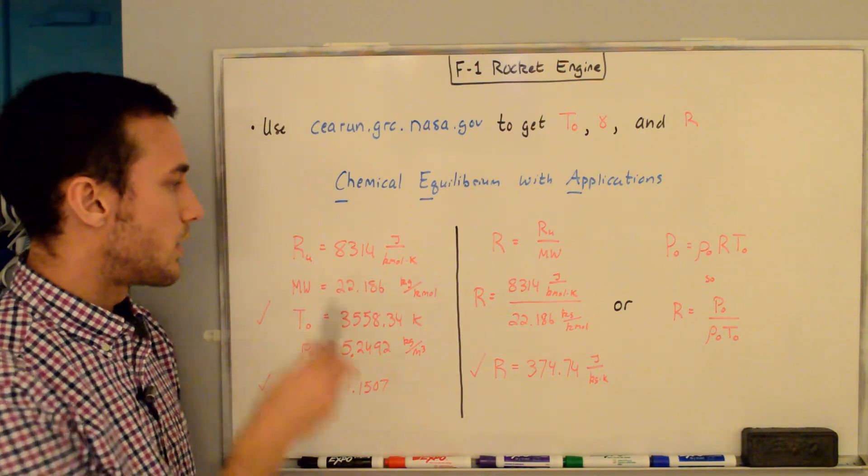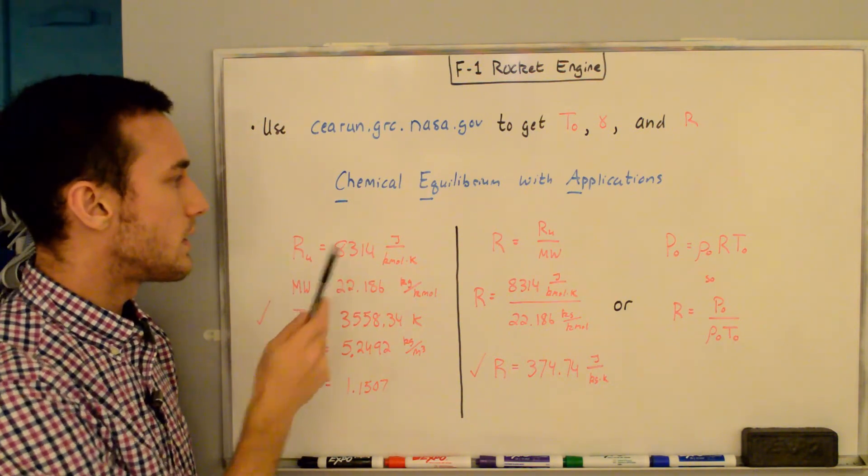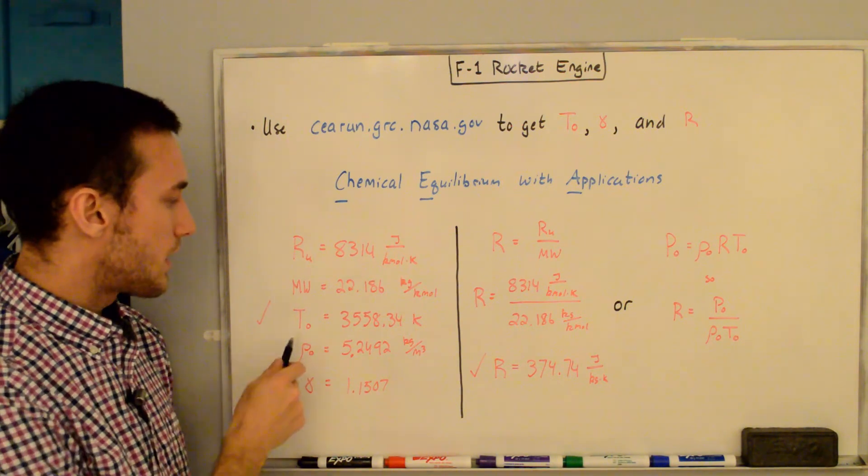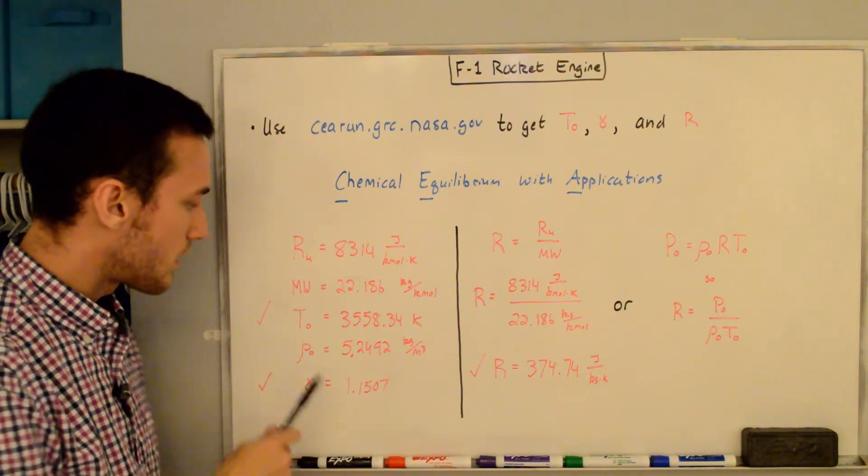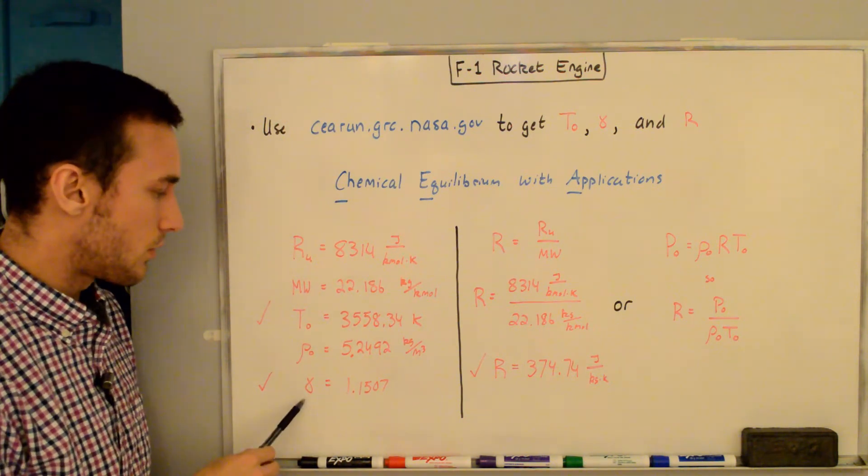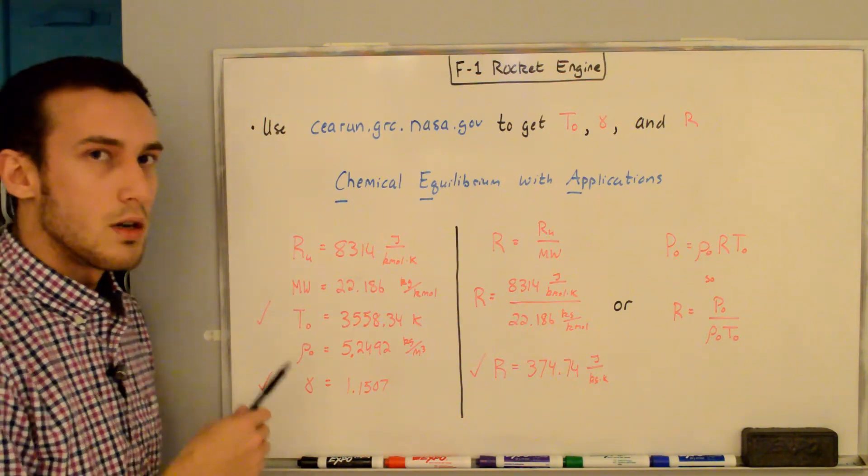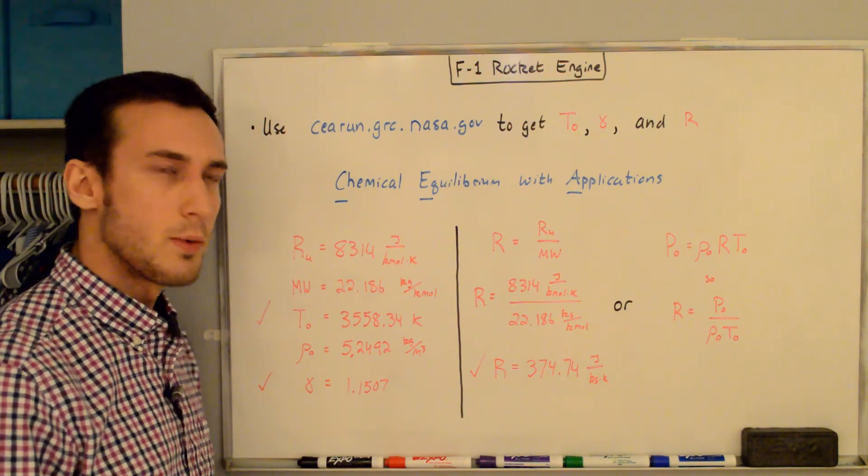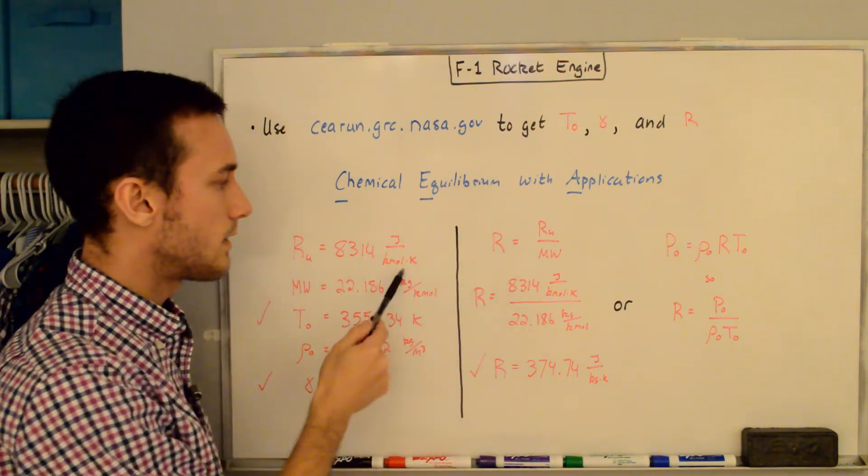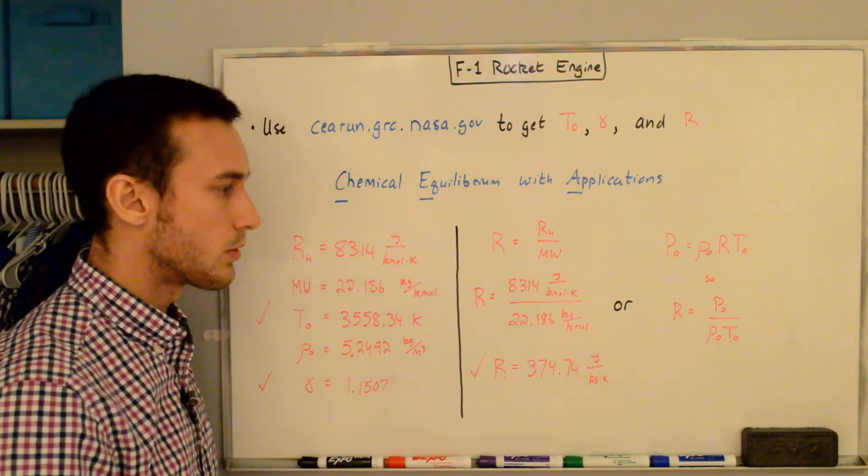As we just saw from the online analysis, we can write the following. We have the universal gas constant, which we know is 8314 joules per kilomole Kelvin. The molecular weight of the mixture is 22.186 kilograms per kilomole. Stagnation temperature is 3558.34 Kelvin. Stagnation density is 5.2492 kilograms per meter cubed. And the ratio of specific heats is 1.1507. So we know T naught and gamma, and we still need to know R, but we can compute R in two different ways. The first way is to take the universal gas constant divided by the molecular weight that we see over here, and we get a final solution of R equals 374.74 joules per kilogram Kelvin.